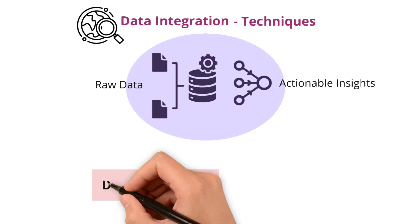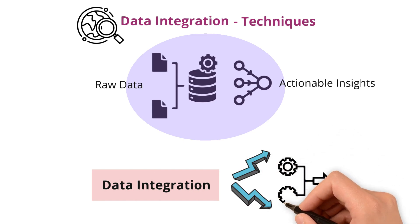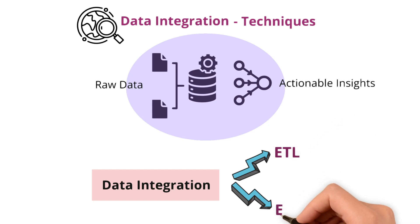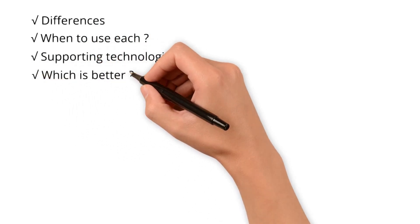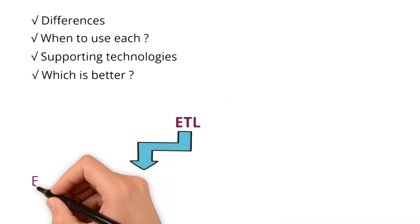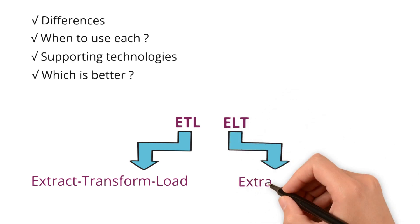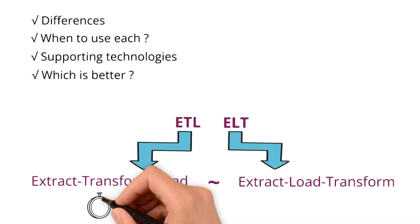Within the domain of data integration, two primary techniques stand out in managing how data is consolidated and prepared for use. They are ETL and ELT. Let's understand their differences, figure out when to use each, explore the supporting technologies, and decide which one might better fit your needs. ETL is an acronym for Extract Transform Load, while ELT stands for Extract Load Transform. Both are similar, but the key difference is the timing of the transformation step.